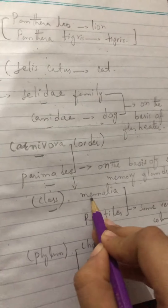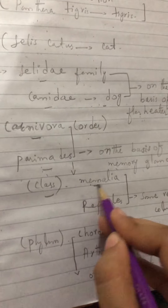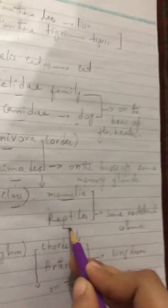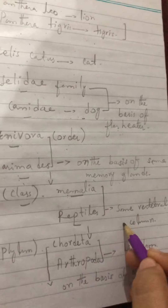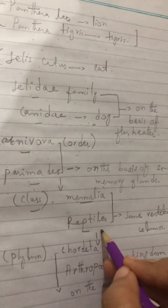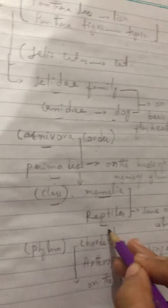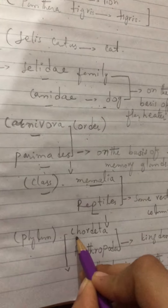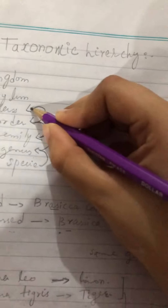This class is called Mammalia. Now we have Mammalia, and we also take Reptiles. As we know, Reptiles and Mammalia share the same vertebral column. We classify them on the basis of this same vertebral column, and they are placed in the same phylum — Chordata.